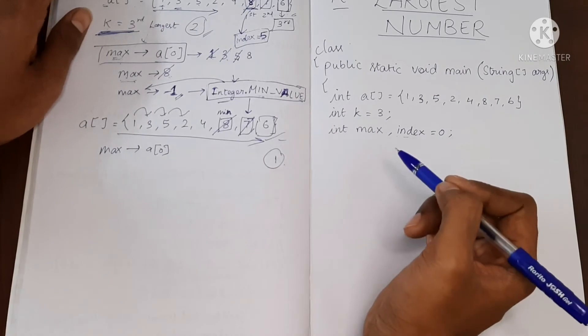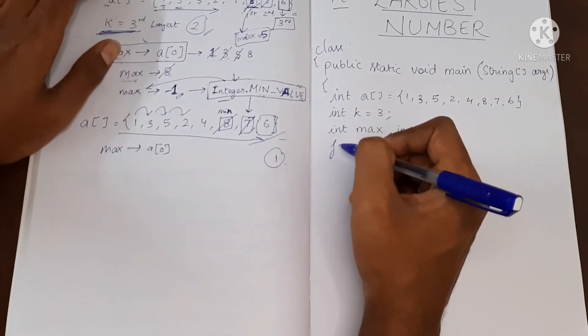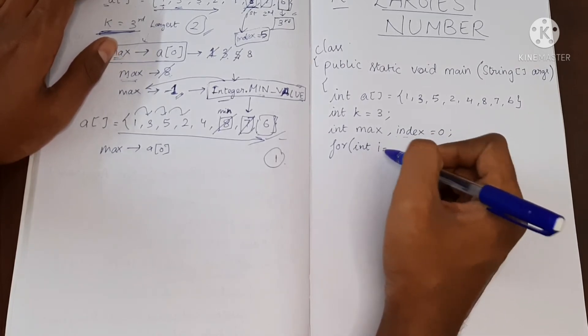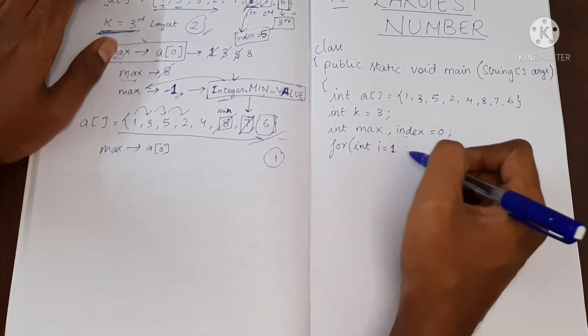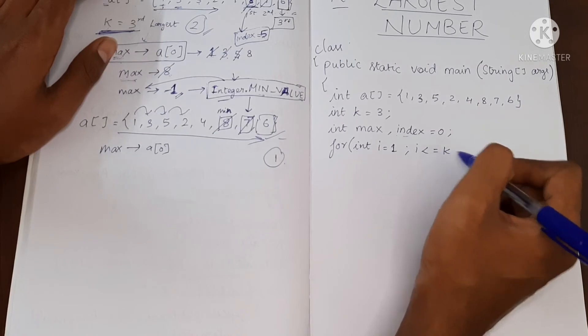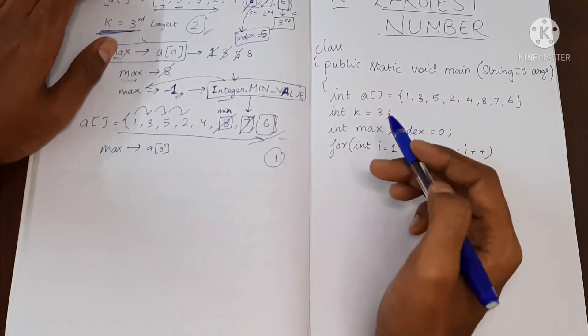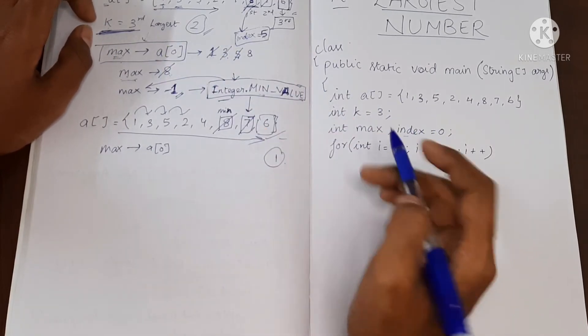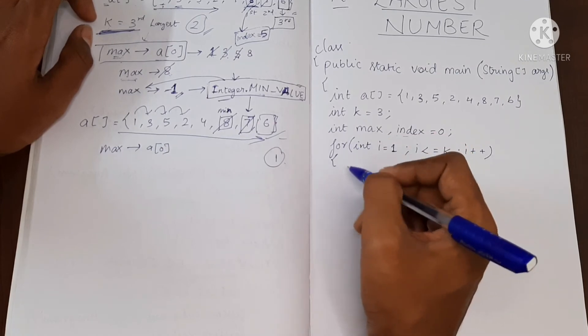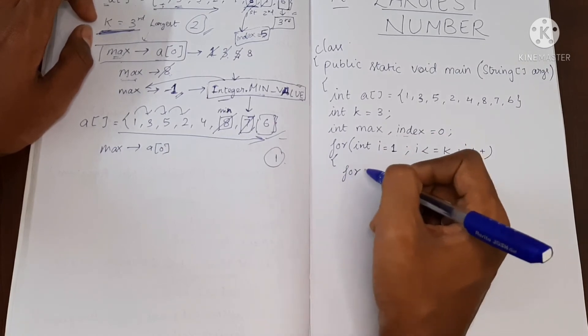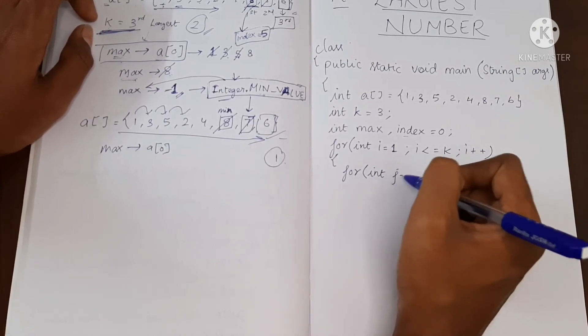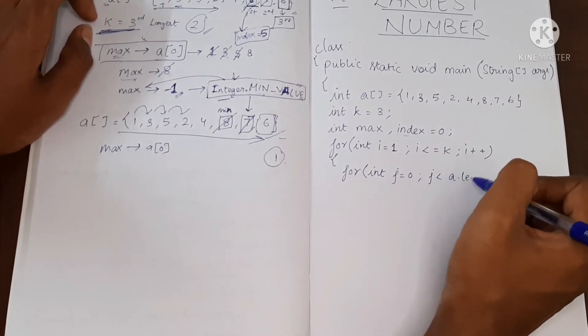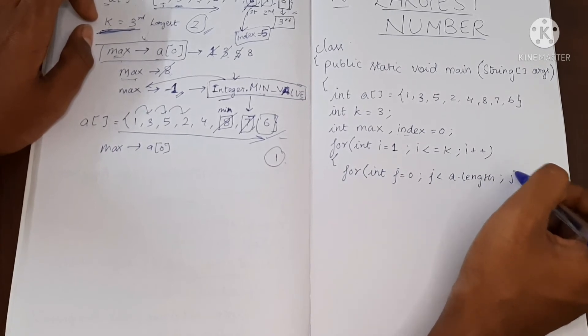So now I have max, I have index. Now let's write the loop for k. We need to find the largest value k number of times right. So I'm running a loop from 1 to k. These many times we have to find the largest value. And now inside here we are going to write the code to find the largest value. I hope you remember: j less than array.length, j plus plus.